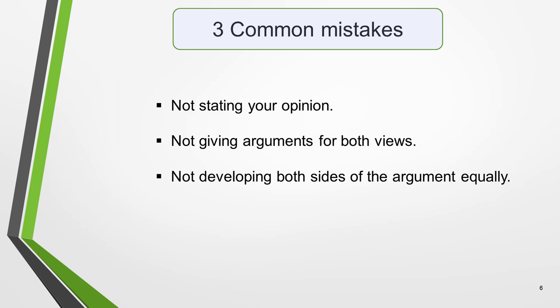The three most common errors made by students are: not giving your opinion, not giving arguments for both views, and not developing both sides of the argument equally. The most common mistake is not giving their opinion — the question clearly states you must choose one side of the argument, and failing to do so results in a low score for task achievement. It doesn't matter which side you take, but you must give equal attention to both sides. Providing a stronger argument for the view you favour leads to an unbalanced essay and a low score.